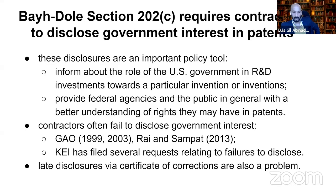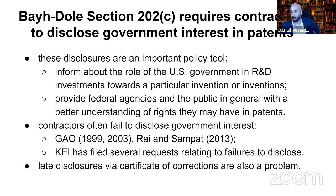And yet, contractors often fail to disclose this government interest statement in their patents. There has been research about this in the U.S. by the GAO office — a report from the late 90s and a follow-up report in 2003 — around this issue of failure to disclose. Professor Sampat, along with Artie Ray, who is here with us on the panel, has made critical empirical contributions to this field too.